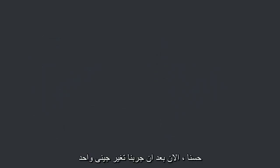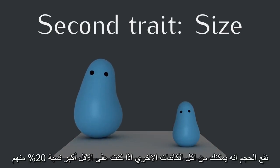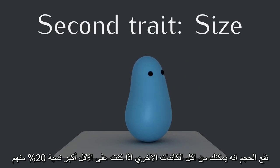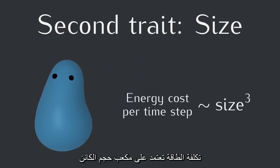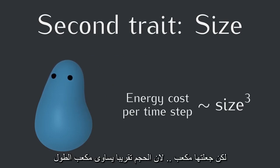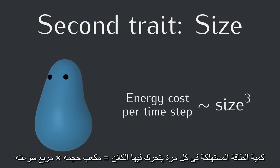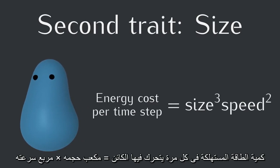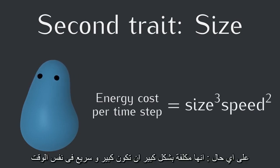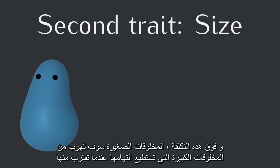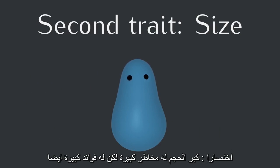Now that we've gotten our feet wet with one varying trait, let's add two more: size and sense. Size scales the creature in all three dimensions. The benefit of size is that it lets you eat other creatures if you're at least 20% larger than them. Getting an extra food source is great if you can pull it off, but being big costs a lot of energy. The energy cost depends on the cube of a creature's size value, because volume scales as the cube of length and volume is closely linked to the mass a creature has to carry around. The total energy cost of a creature's movement each time step is equal to the cube of the creature's size times the square of the creature's speed, which is reminiscent of the formula for kinetic energy. It's especially costly to be both big and fast. And smaller creatures will actually run from creatures big enough to eat them, so to benefit from being big, you need at least some speed. Long story short, being big is high risk and high reward.